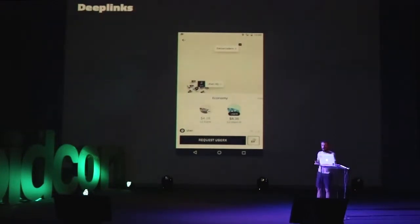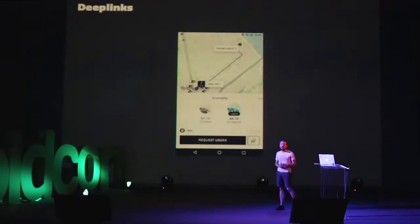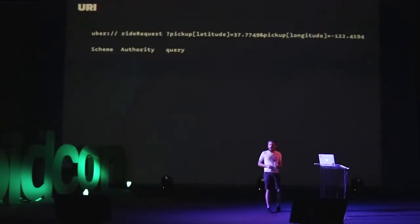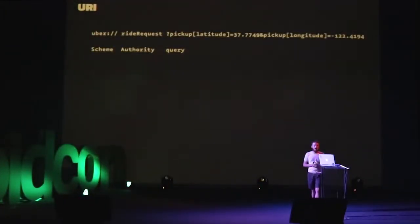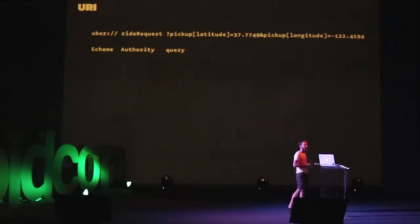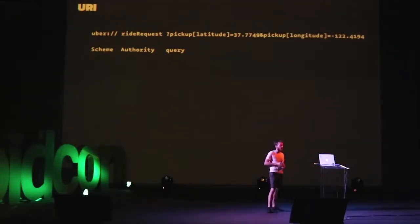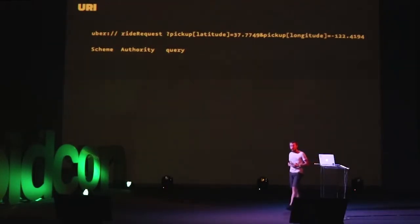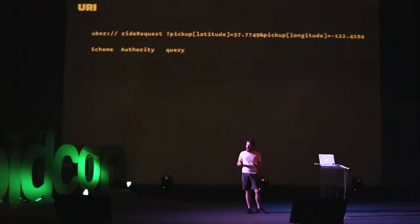A deep link is really just a URI that your application is registered to handle. In this case, we'll talk about the Uber Ride Request URI. It's just a standard HTTP URI — a series of parts that communicate the intention of the deep link. In this case, our scheme is "uber". The Android app on the device is registered to handle that so Android knows where to send it. The authority, in this case, is "ride_request" to initiate the specific type of deep link, and then we send the additional pickup and drop-off information as query parameters.